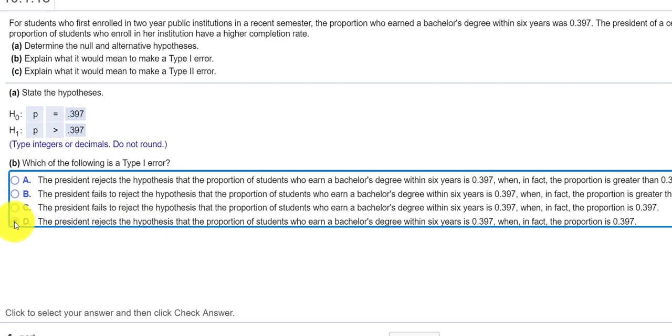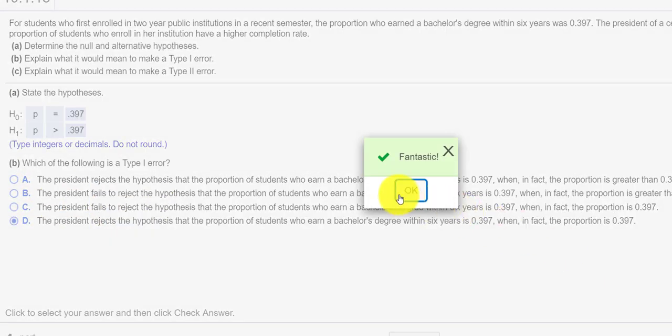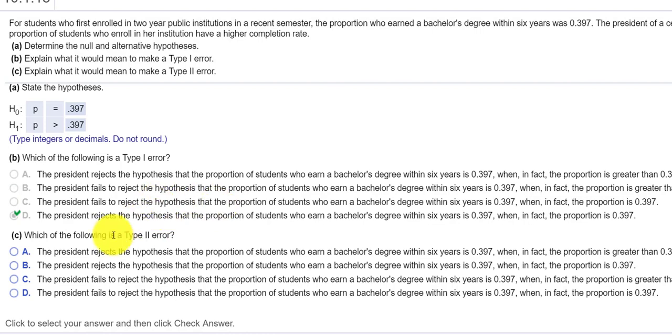So a type 1 error would be if we reject this even though this actually turns out to be true. Press D. Check answer. Fantastic. Let's try another one. Type 2 error. Okay.